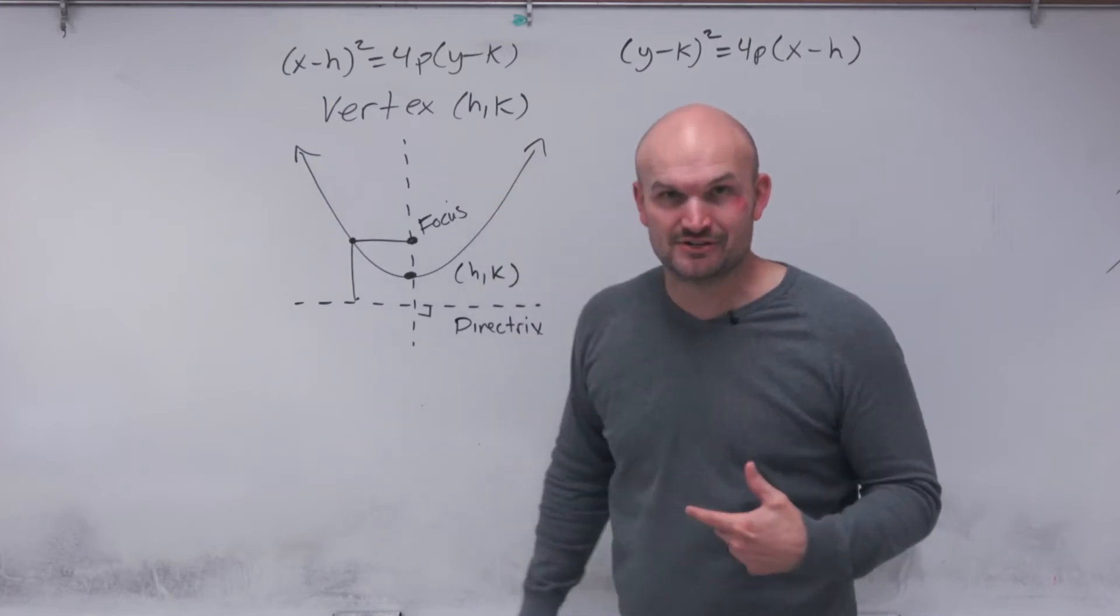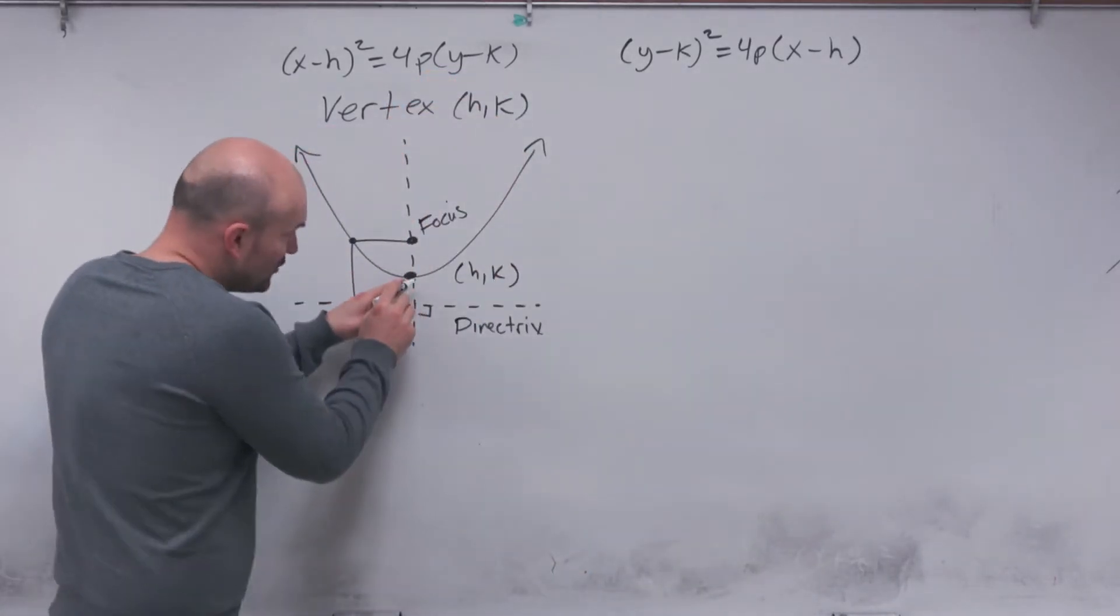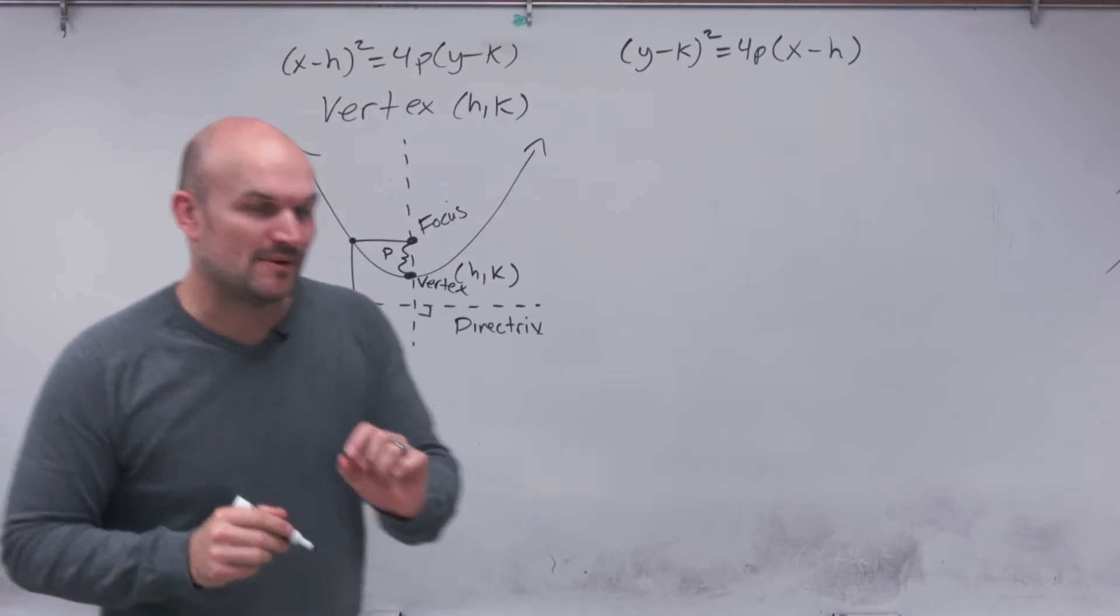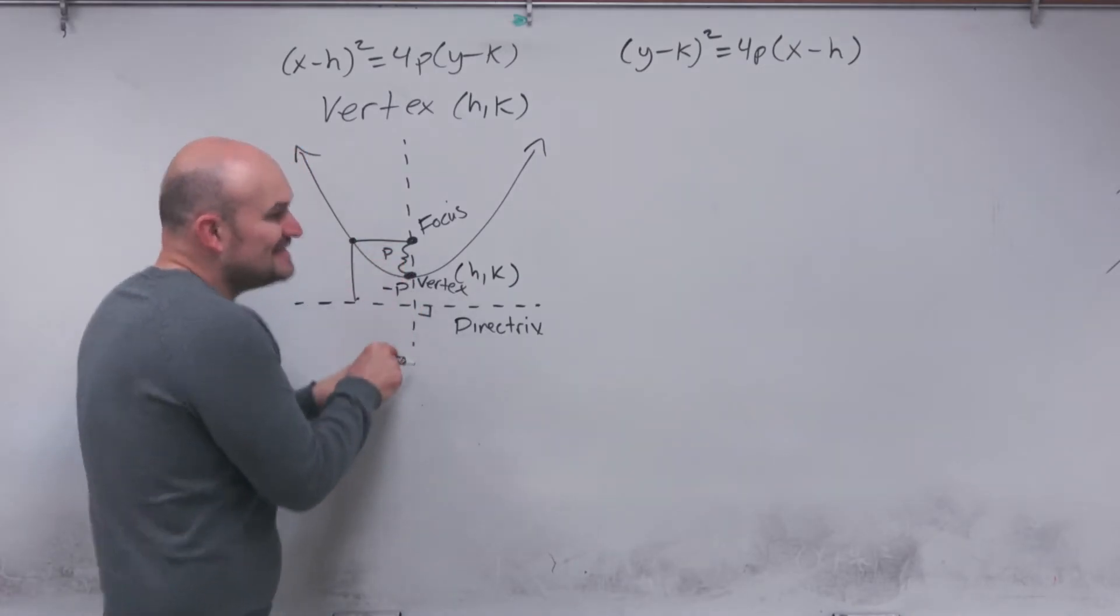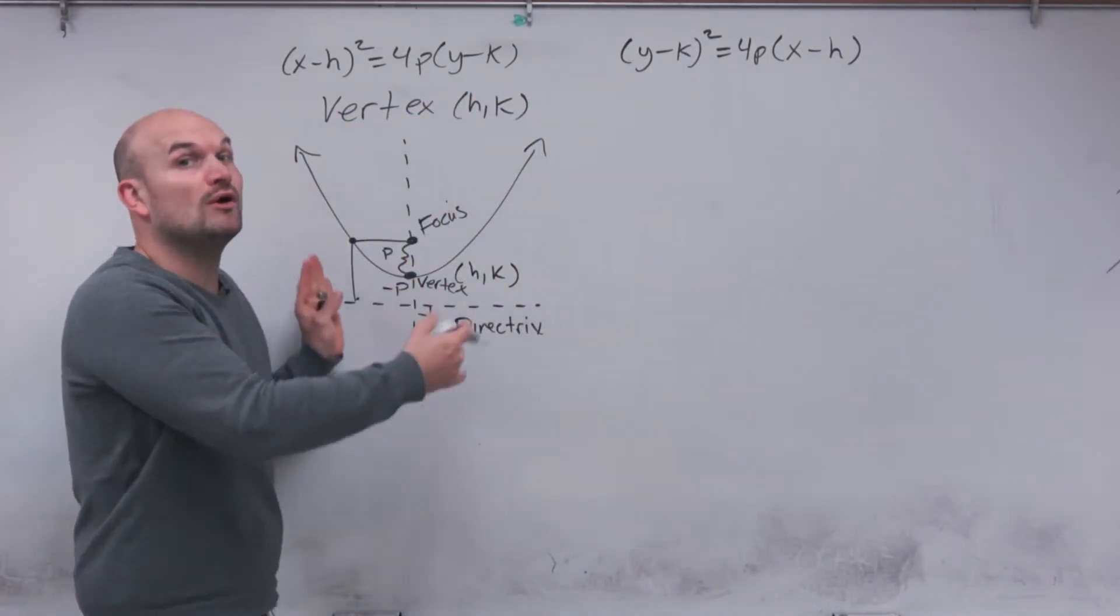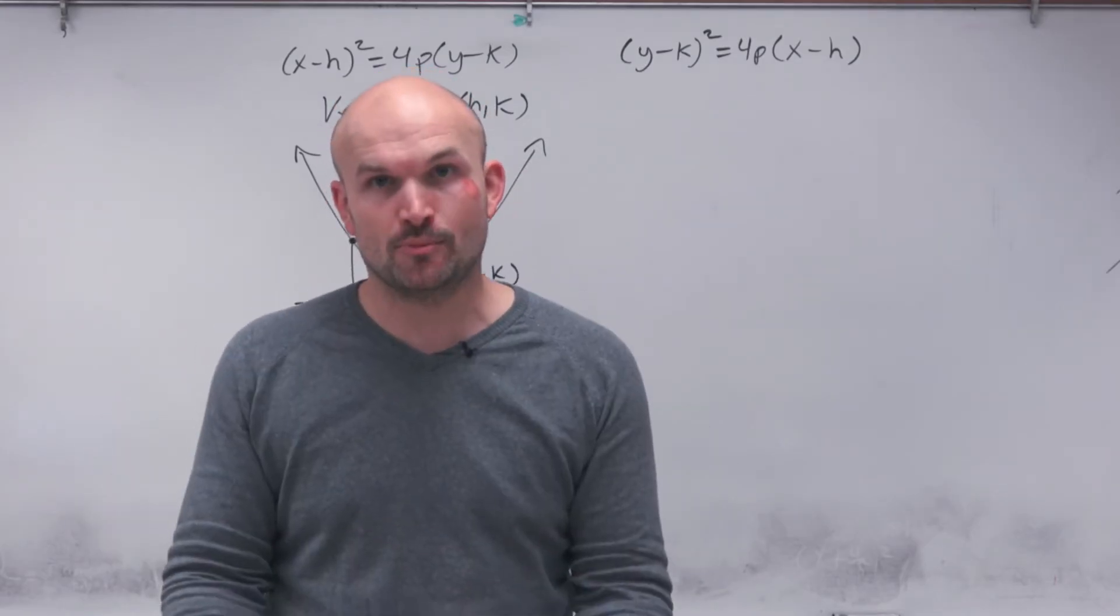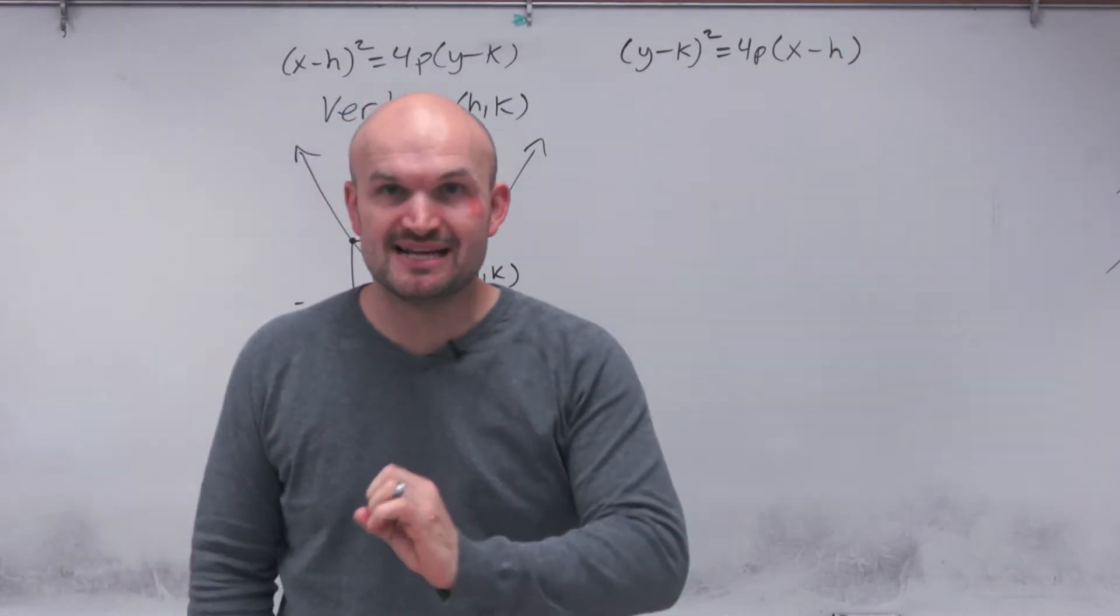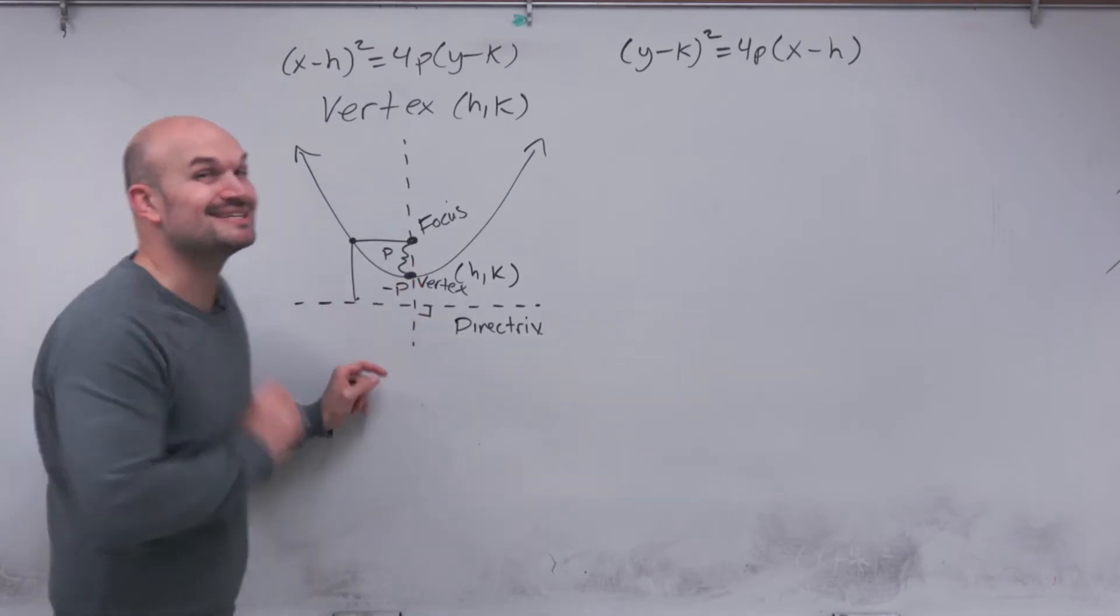So how do we find this focus and the directrix? Well, it's this value P. P represents the distance and the direction from my vertex to my focus. So this distance right here is going to be P. Now, if I want to go to my directrix, I'm just going to do the opposite direction. The same distance is just going to be in the opposite direction. So this is going to be negative P, or opposite of P. Because it's not always going to be negative. A quadratic can open up or open down. So if the value of P is negative, it's going to open down. If you remember for quadratic equations, when A was negative, the parabola opened down. When A was positive, it opened up. That's the same thing, but now we're going to be dealing with P. But again, just remember, P represents the distance and the direction from our vertex to our focus. And if we want to find the directrix, we're just going to go the opposite direction but the same distance.